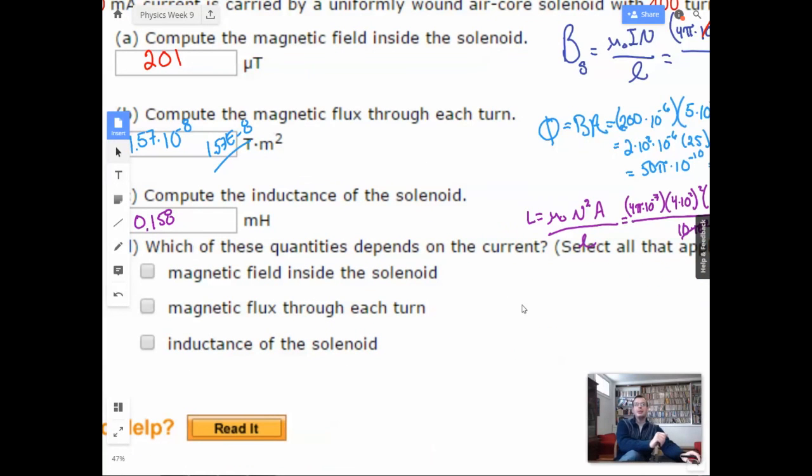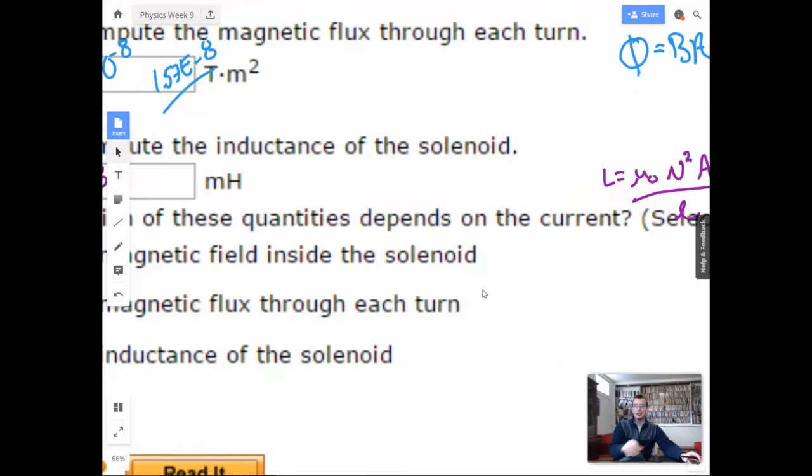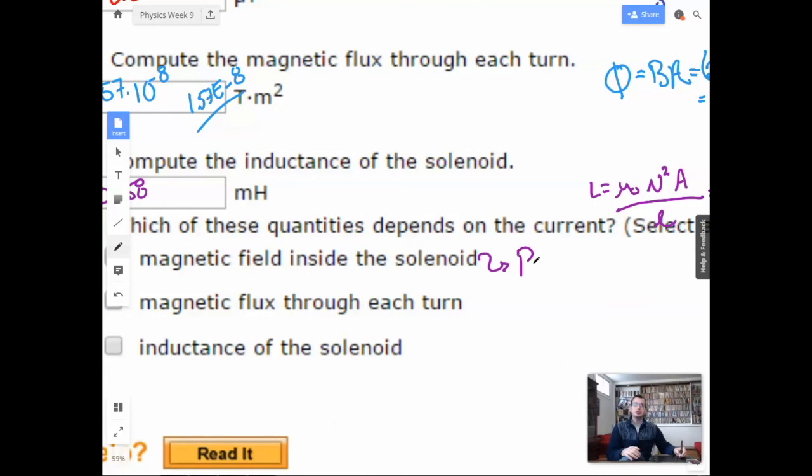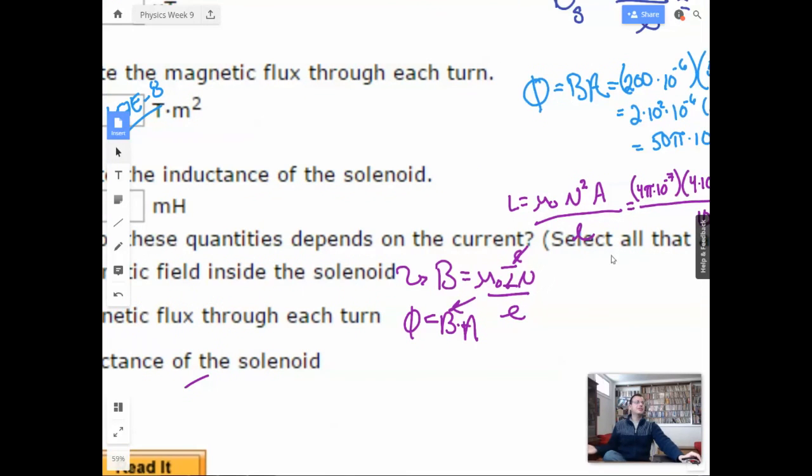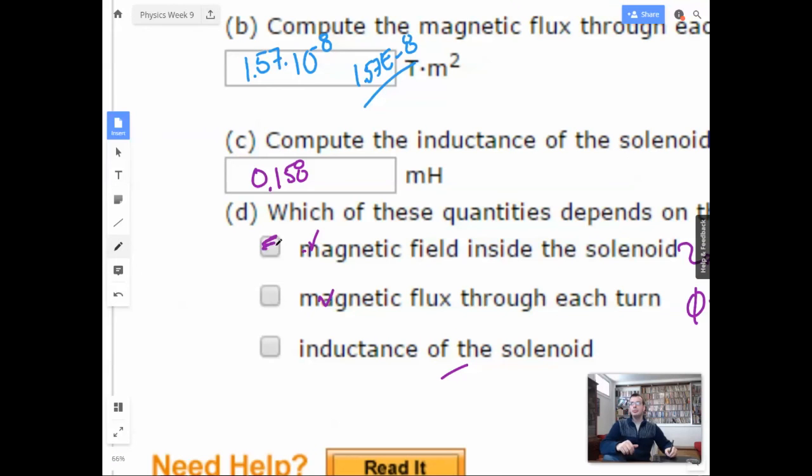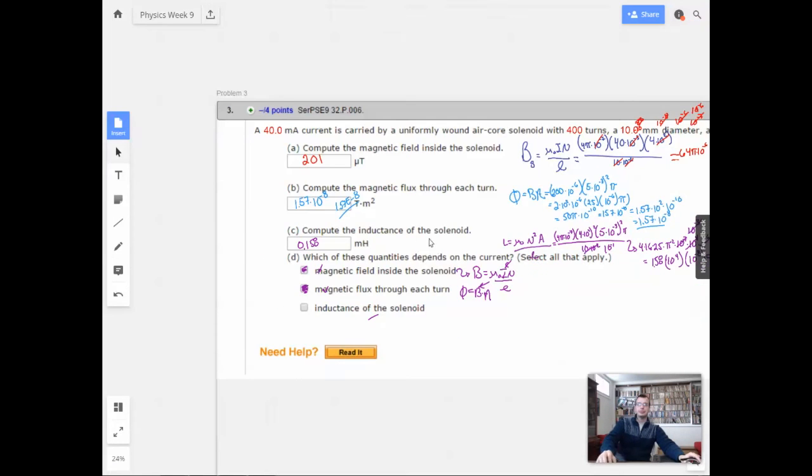Which of these quantities depends on the current? Select all that apply. Magnetic field inside the solenoid. Well, we just wrote the equation. This was B equals mu-naught I, number of turns per length. There's a current right there. So check. Magnetic flux through each turn. Well, flux equals magnetic field times area. You already know that area has to do with current. So check. And inductance. I was going to say right now, no. Because when you buy a solenoid, you have like an inductance associated with a solenoid. And when the cashier guy is handing you the solenoid over the counter, there's not current flowing through it. That'd be terribly dangerous. Plus, this equation right here doesn't have current in it. So no.